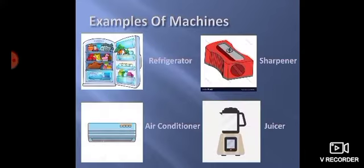Next we have the examples of machines. Aap dekh sakte hai. We have four examples. Refrigerator, sharpener, juicer, and air conditioner. All these are machines.